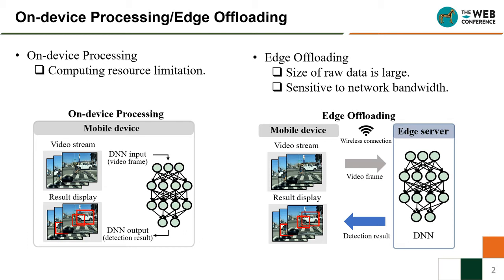For on-device processing, the DNN is integrated in the mobile device and processes the local data. However, the mobile's computation resources limit on-device processing. For edge offloading, the DNN is implemented on the edge server and the mobile device offloads its data to the edge server for processing and receives the result from the edge server.